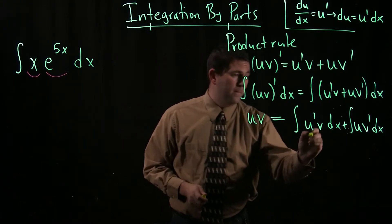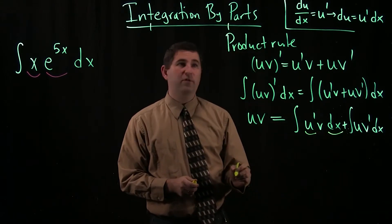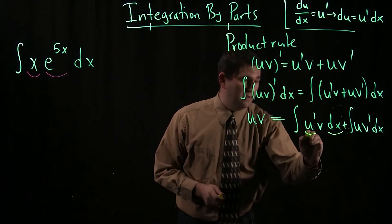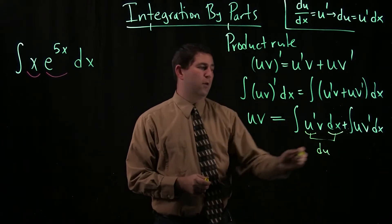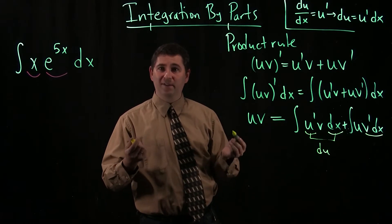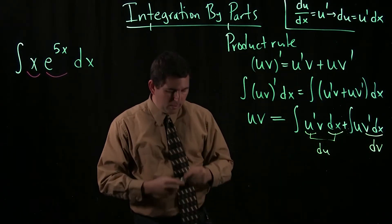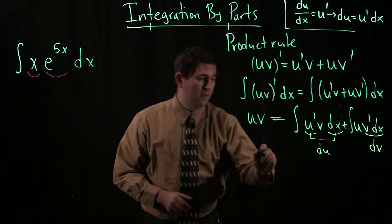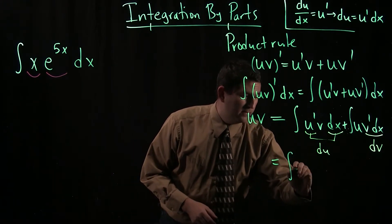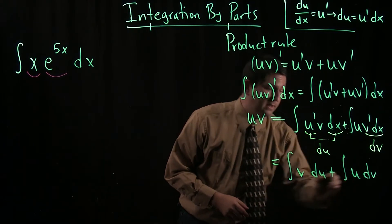So I'm going to use that to rewrite my two integrals on the right. So, for example, this u prime and this dx, I can put those together. I have that up here as du. And over here, I have a v prime and a dx. I can put those together as a dv.